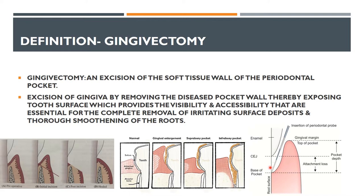Exposing the tooth surface provides visibility and accessibility. If calculus is present beneath the gingiva, you cannot see it properly. The visibility and accessibility attained by gingivectomy are essential for complete removal of irritating surface deposits and thorough smoothening of the roots.